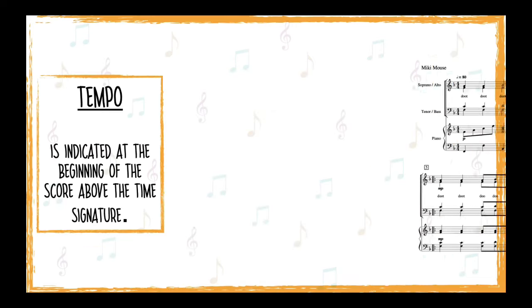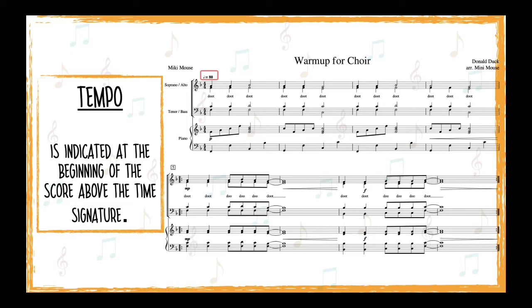Tempo, or the speed of the piece, is indicated at the beginning of the score above the time signature. Tempo can either be indicated with a number, like a metronome marking, or with a word such as allegro, vivace, calmly, espressivo, and such.